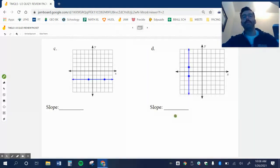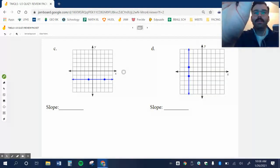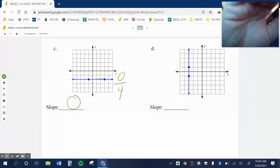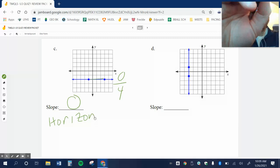Here, in this problem, I go up 0 and over 1, 2, 3, 4. Well, 0 over 4 is just, 0 over any number is 0. This is a horizontal line. Horizontal lines always have the slope of 0.